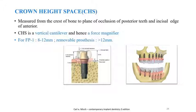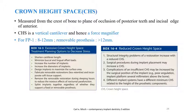Crown-arch space is measured from the crest of the bone to the plane of occlusion of posterior teeth and the incisal edge of the anterior teeth. Crown-arch space is a vertical cantilever and hence a force magnifier. For FP1 prostheses it should be 8 to 12 mm, whereas for removable prostheses it has to be more than 12 mm. Treatment planning options to decrease stresses for excessive crown-arch space include shortening the cantilever, minimizing the buccal and lingual offset load, increasing the number of implants, and increasing the diameter of the implant. Removing the removable restoration during sleeping hours is also recommended. Structural integrity problems increase with reduced crown-arch space; surgical procedures during implant placement may increase it, and complications of insufficient crown-arch space may be increased by the surgical position of the implant.